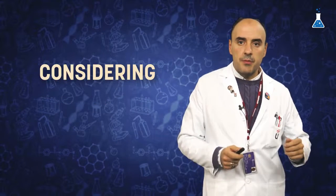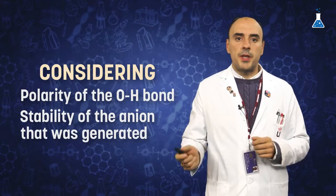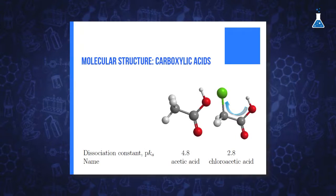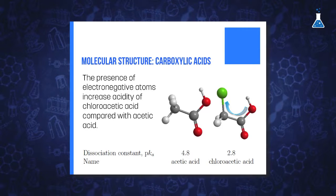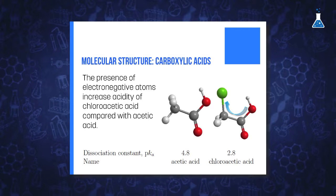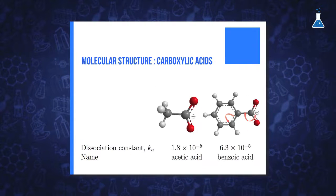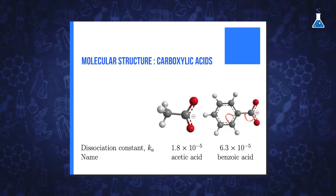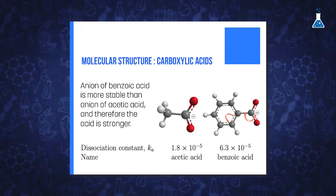Similar arguments can be used in the case of organic acids, considering both the polarity of the oxygen-hydrogen bond and the stability of the anion generated in order to predict the acid strength. For example, if we compare acetic and chloroacetic acid, the presence of an electronegative atom such as chlorine will withdraw electron density to a greater extent and therefore chloroacetic acid will be more acidic. If we compare acetic acid and benzoic acid, the higher tendency to delocalize the charge throughout the benzene ring makes the corresponding anion more stable and therefore the acid stronger.